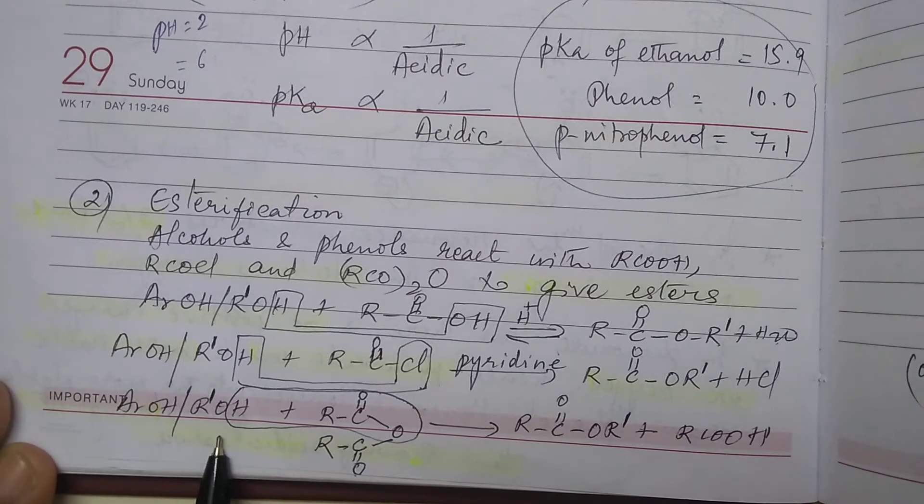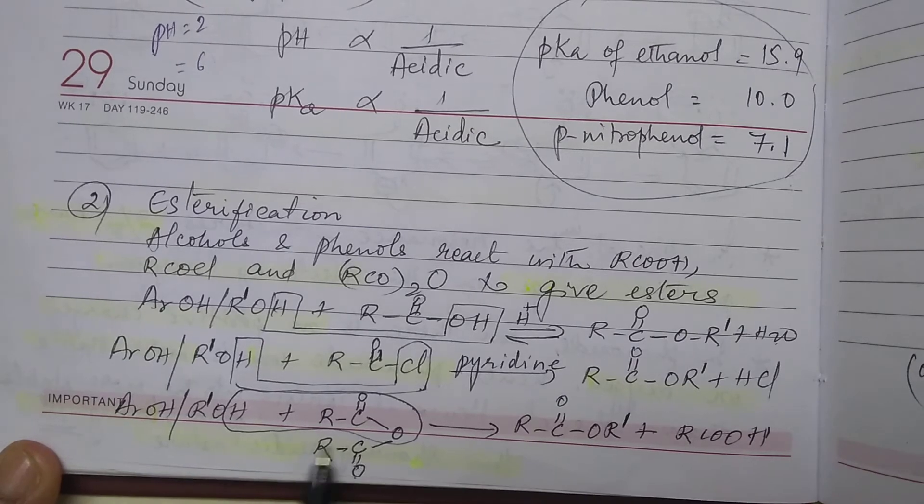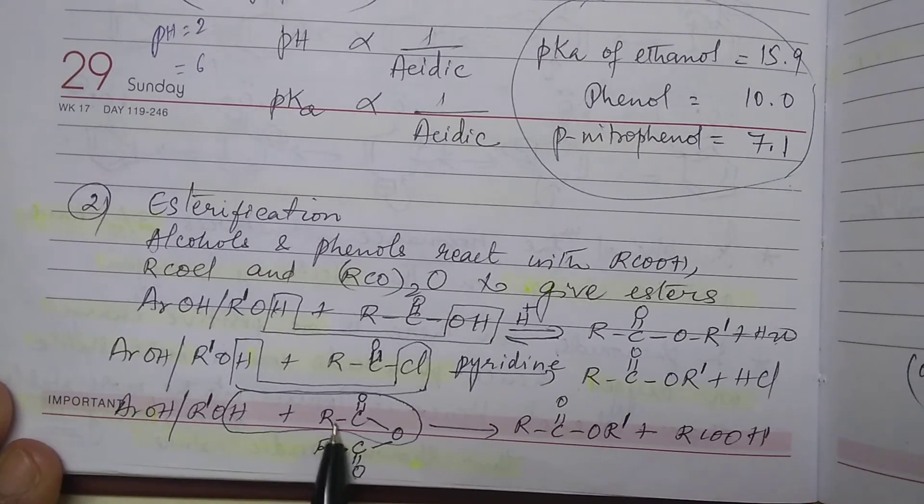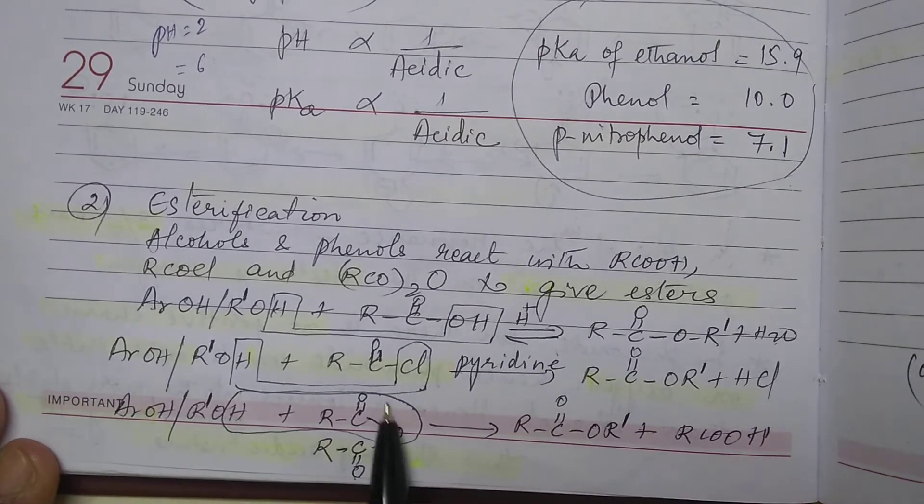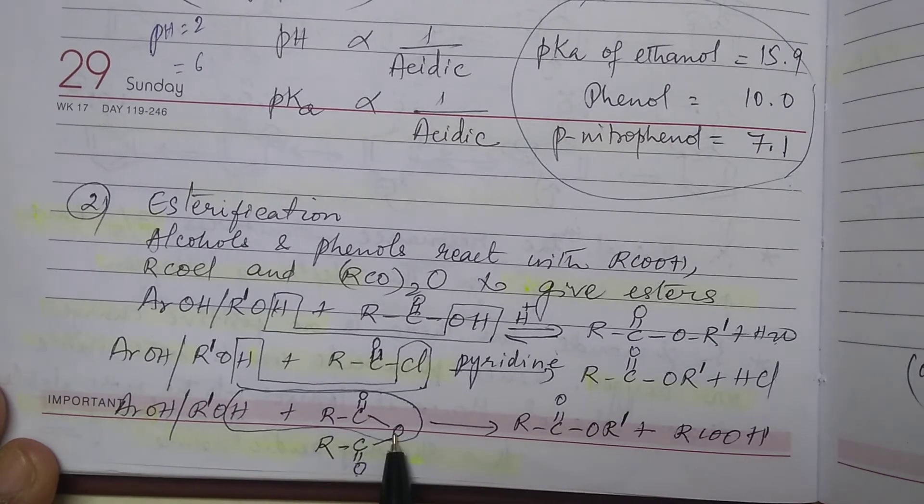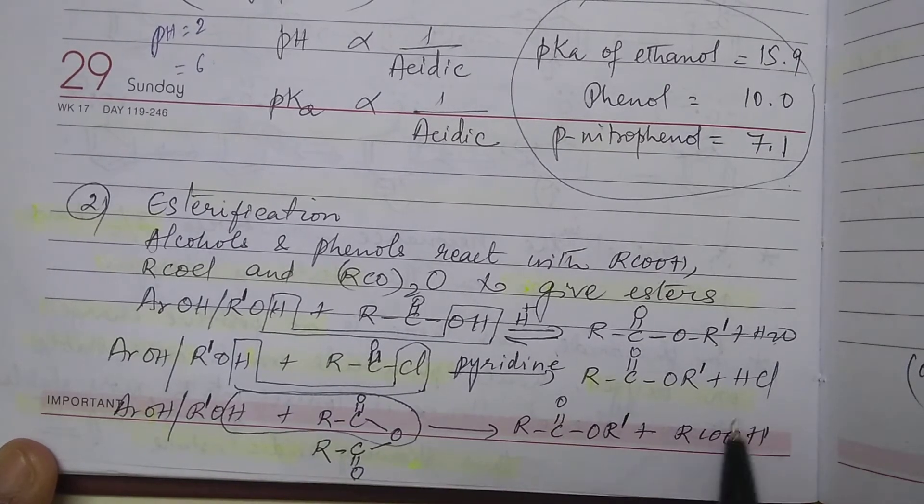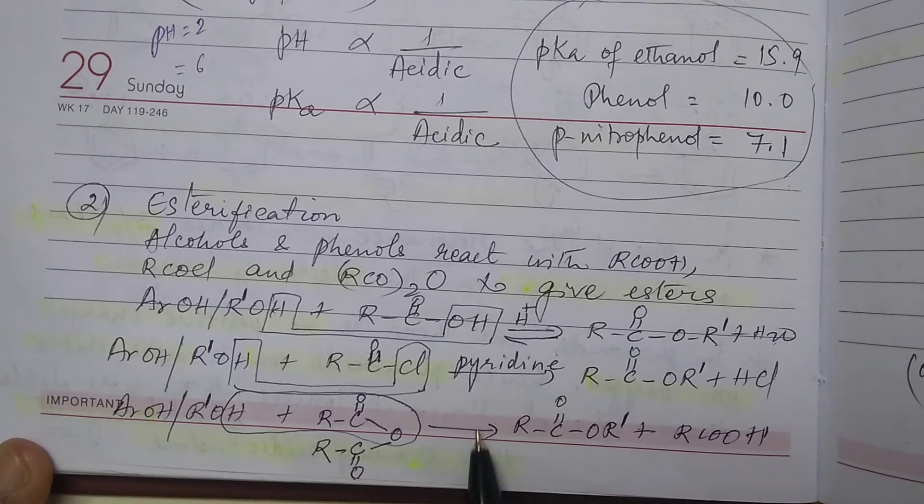Same way alcohol or phenol can also react with anhydride. Hydrogen of alcohol with RCOO group. This is anhydride, RCOOR. So one molecule of acid and one molecule of ester you will get.